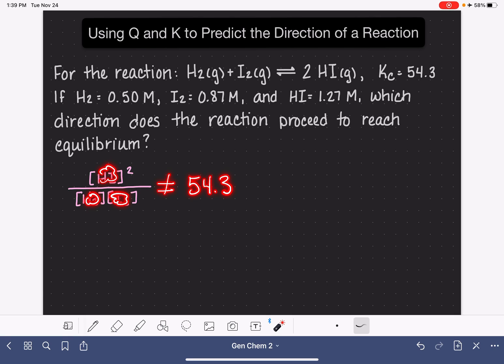When we get this different number, something other than 54.3, because it is not the equilibrium constant, we refer to it as Q. So I'm just going to slide this over, and we're going to write in here that we are calculating a Q.